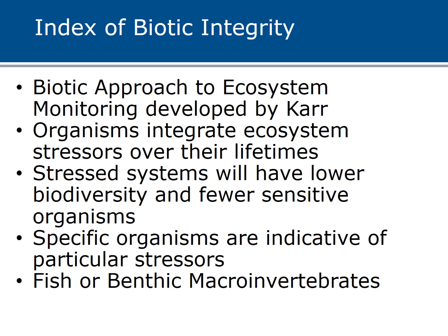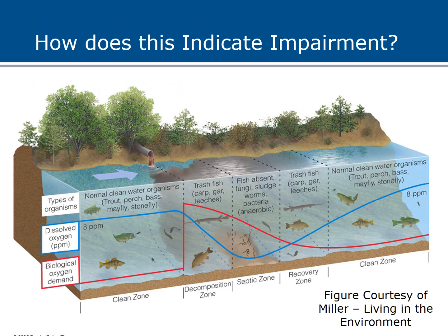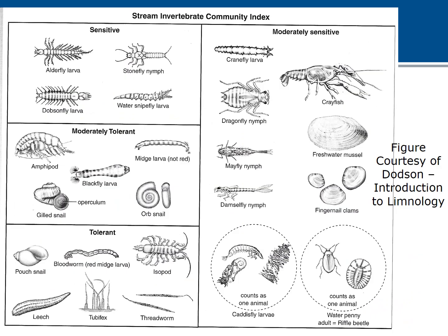Both fish and benthic macroinvertebrate measures have been developed. Benthic means on the bottom, macro means large, and these are invertebrates — larval forms of insects large enough to be seen with the naked eye or a hand lens. As you move from upstream to downstream, you can see how the invertebrate community changes: mayflies and stoneflies in the clean zone, transitioning to leeches, then sludge worms and rat-tailed maggots in the septic zone, then back to leeches, and eventually back to mayflies, stoneflies, and caddisflies. The organisms present can indicate how polluted a particular system is.